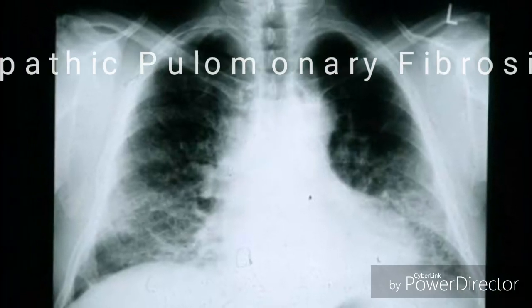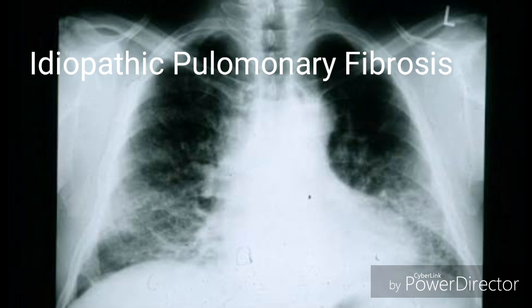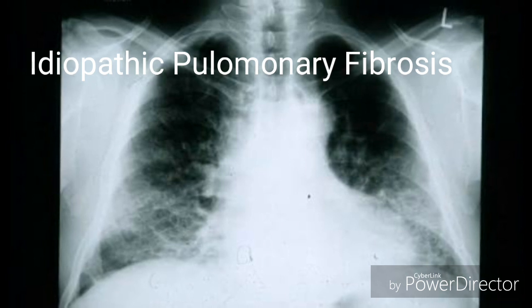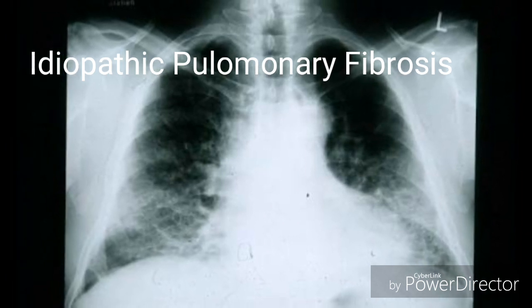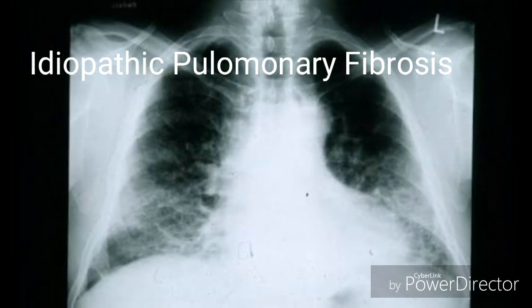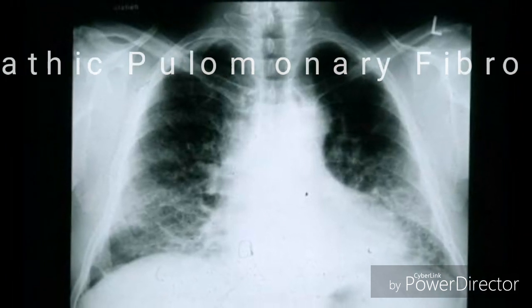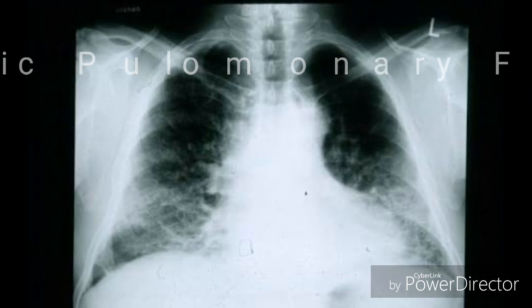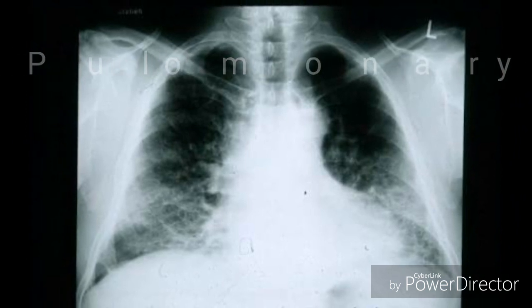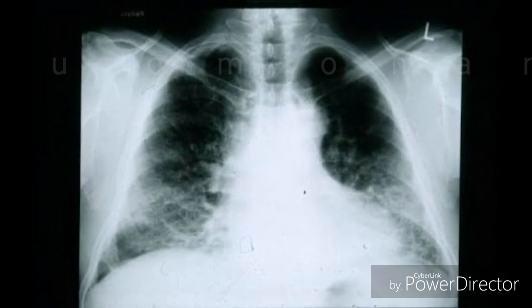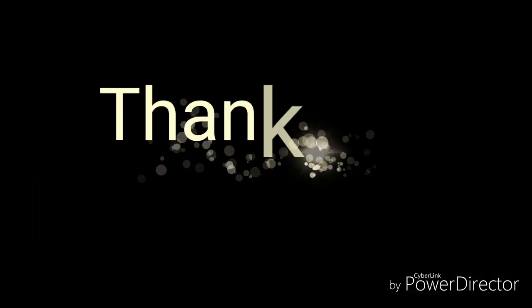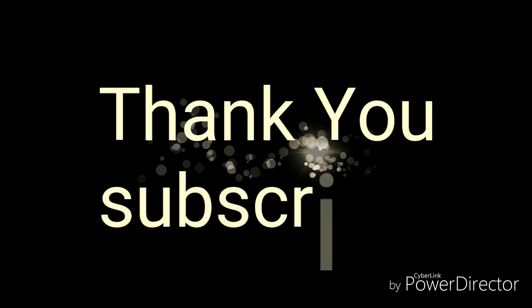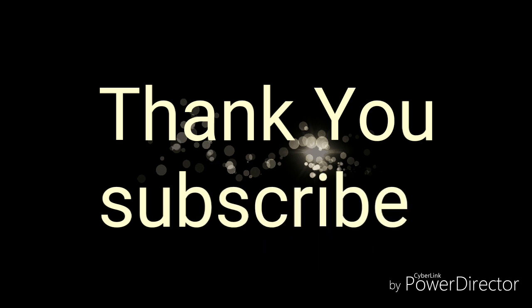Last but not the least, this is the chest X-ray of idiopathic pulmonary fibrosis. In this chest X-ray you can see there is peripheral reticular shadowing at the periphery of both lungs. Thank you for watching this video and don't forget to subscribe.